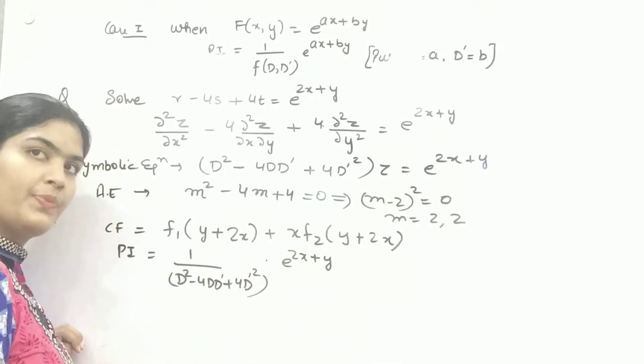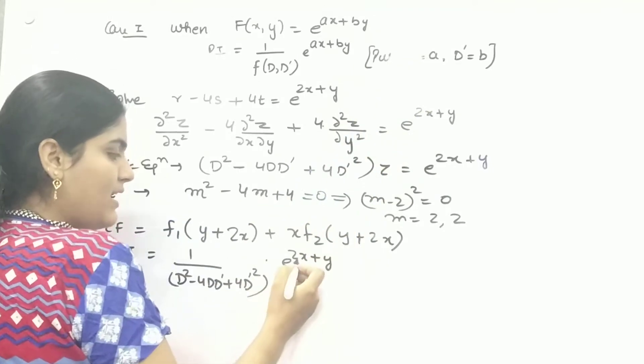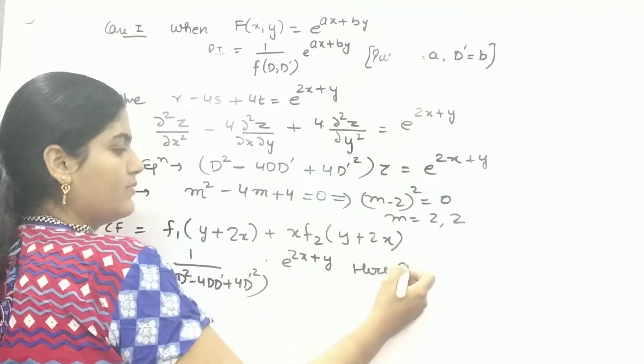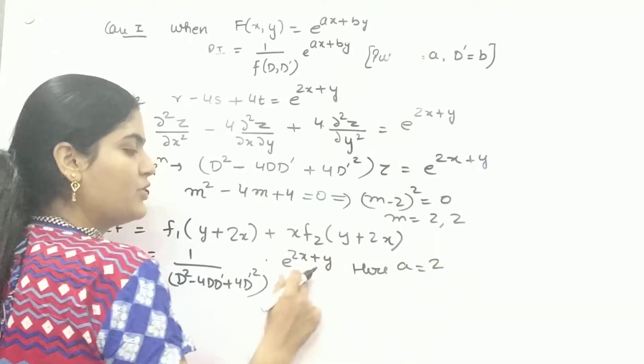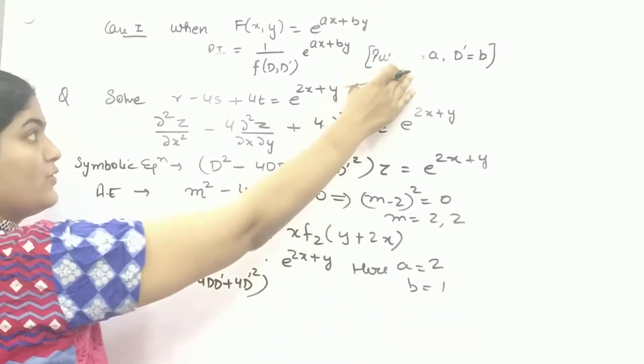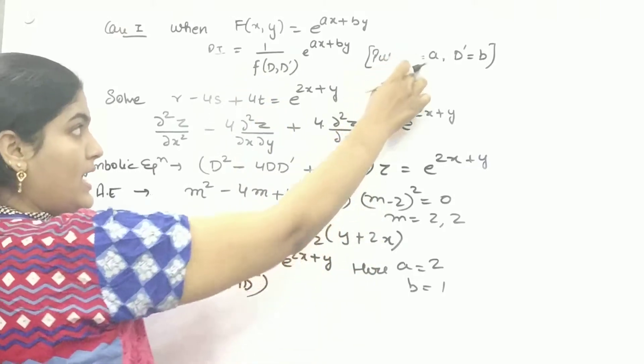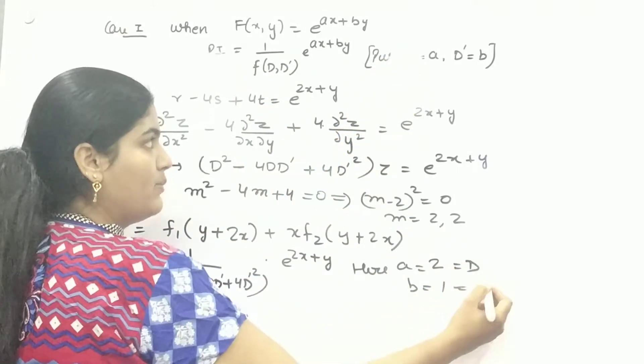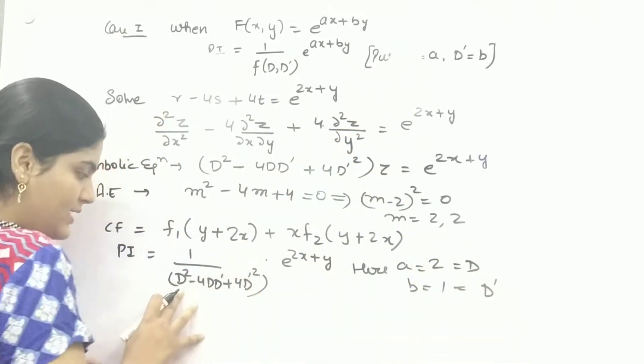So now, put D as A. What is A here? 2, coefficient of X and B, coefficient of Y. So what do you need to do? You need to put A as D and B as D dash. So let's try to do it.